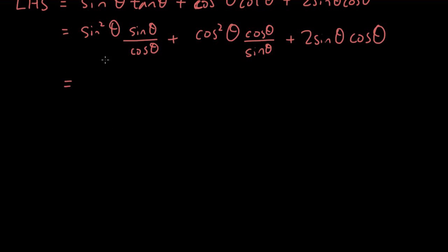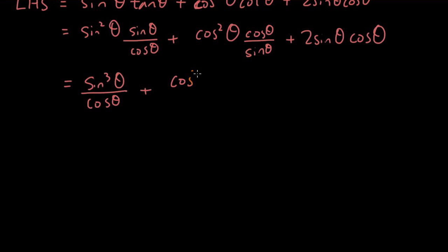The left fraction turns into sine cubed theta over cosine theta, the middle fraction becomes cosine cubed theta over sine theta, and then we have plus two sine theta cosine theta.